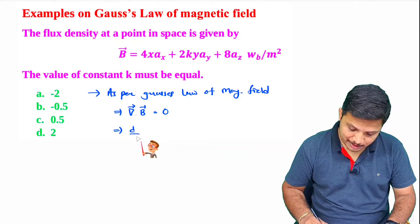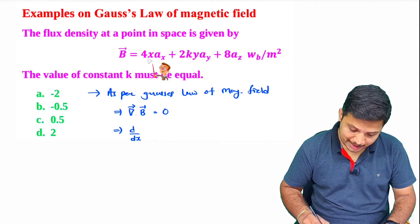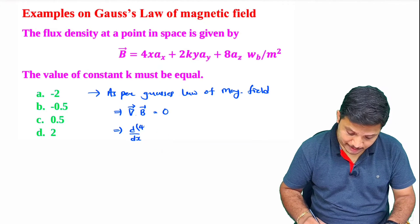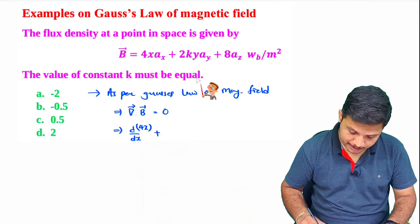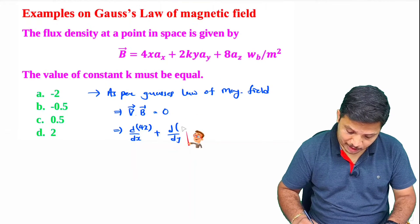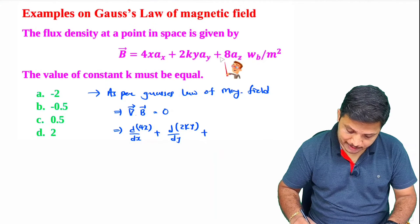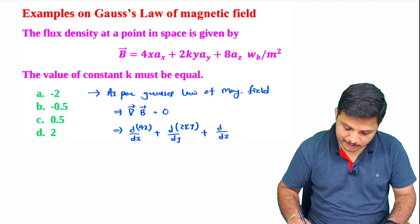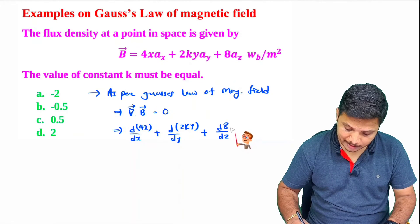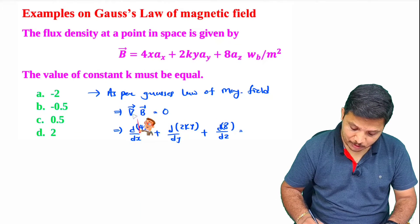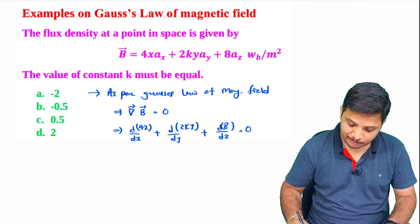So what is the divergence? It is del/dx of the x-component — the x-component is 4x — plus del/dy of the y-component — the y-component is 2ky — plus del/dz of the z-component — the z-component is 8. And that equals zero as per Gauss's law for magnetic field.